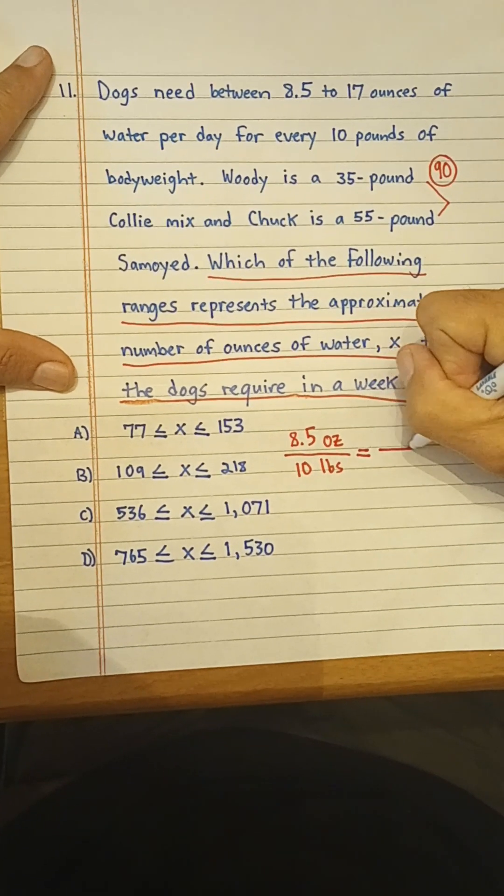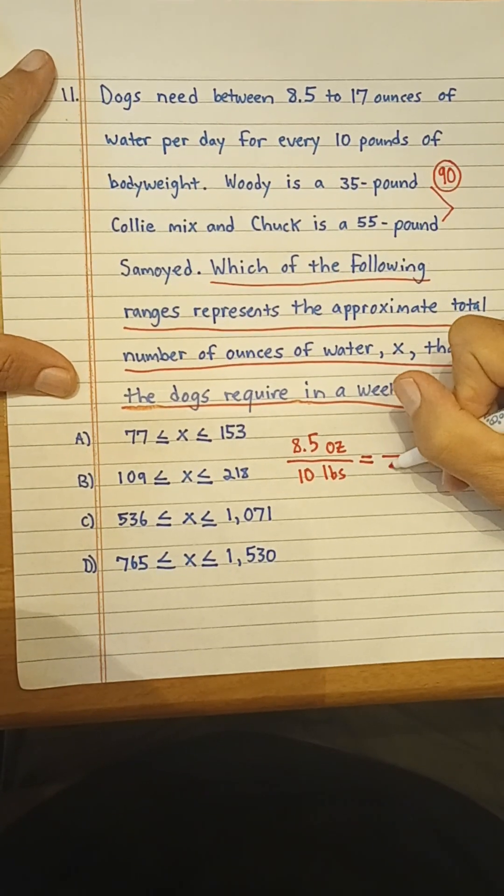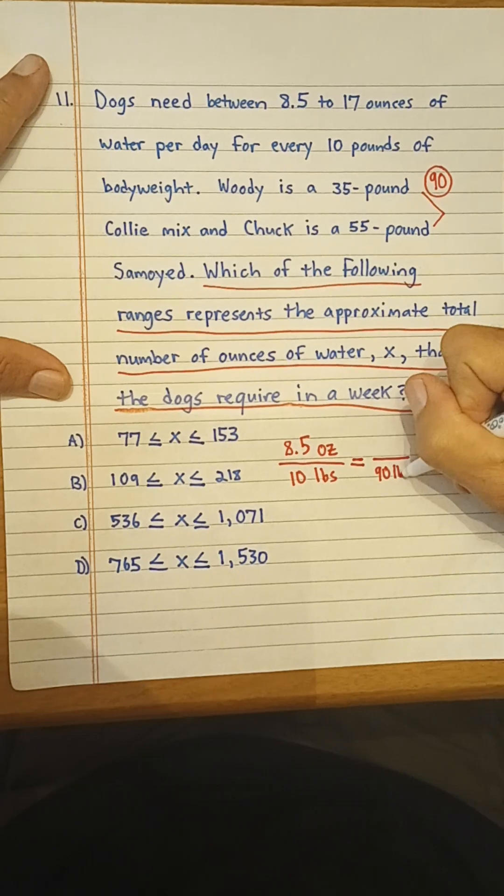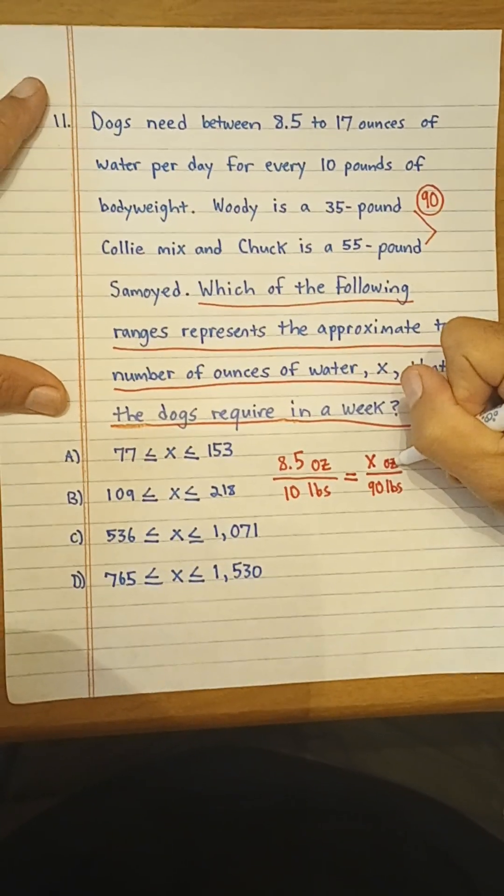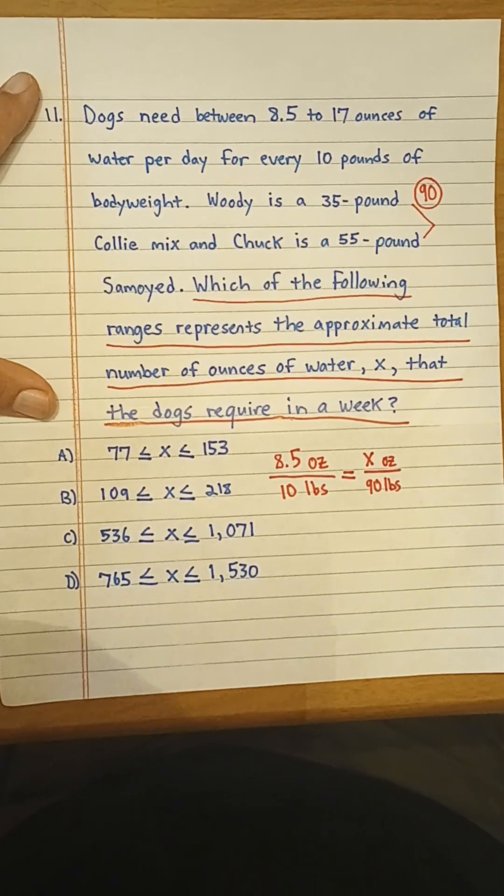here, the full body weight is 90 pounds, and we have some unknown ounces of water, and that is what we're looking for.